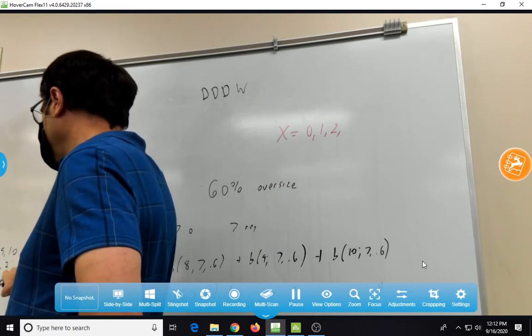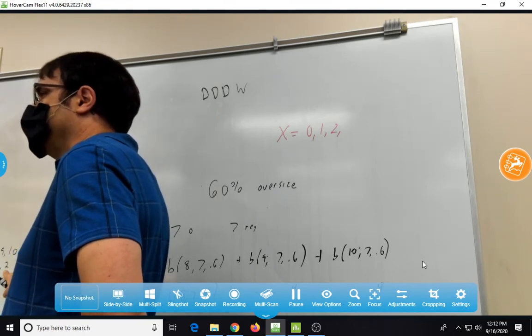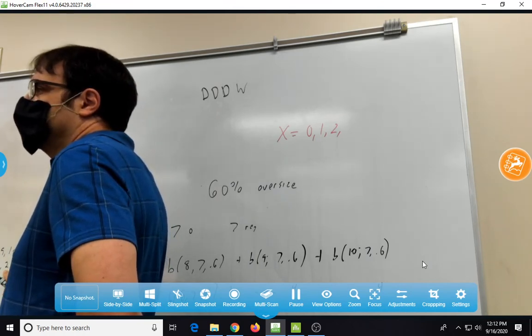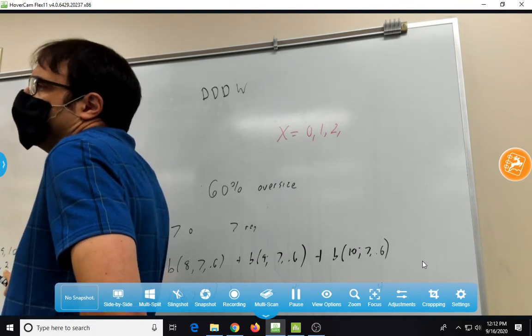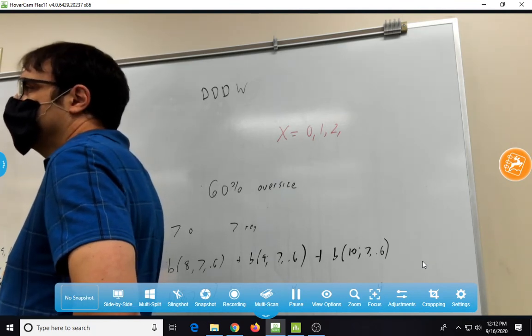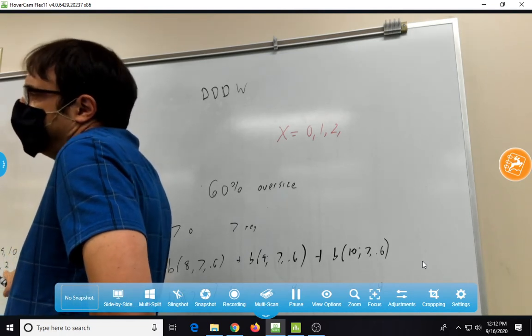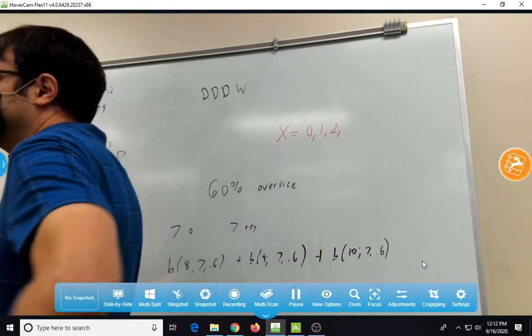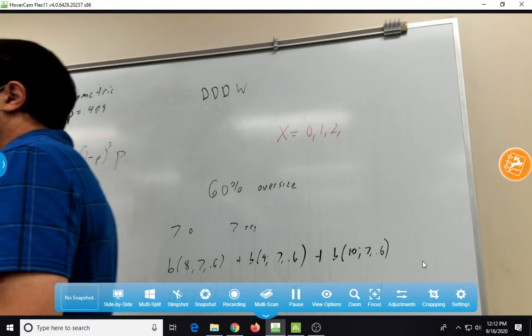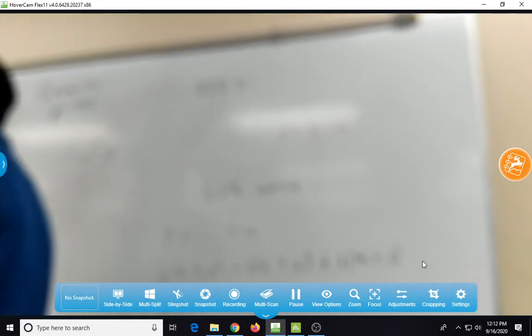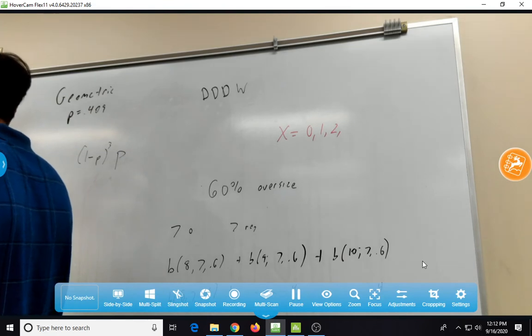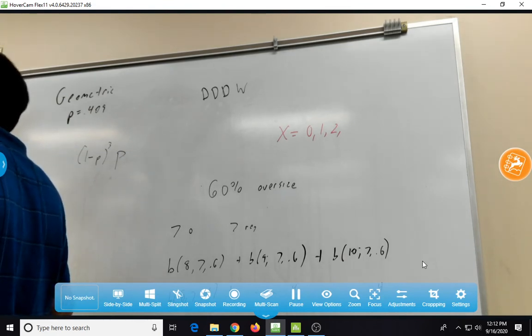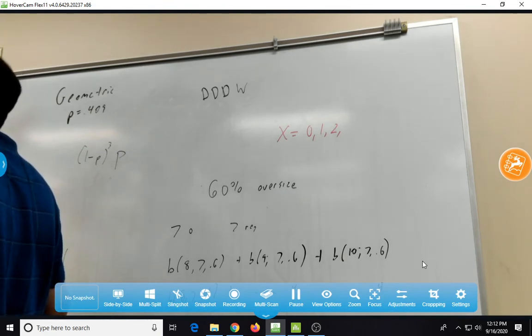Because if only two people were out of the oversized racket, what do the other 8 want? The regular size. And so we would have run out of that. So oversized is a success, right? In this case, it's a success, yeah. You remember, success does not mean a good thing in statistics all the time.